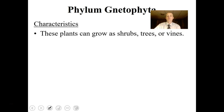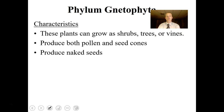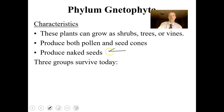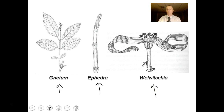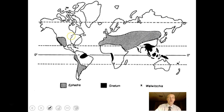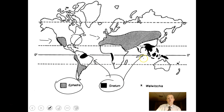The netophytes are plants that grow as shrubs, trees, or vines, producing both pollen and seed cones with naked seeds. The surviving members are Gnetum, Ephedra, and Welwitschia. Ephedra has a worldwide distribution and is found in arid areas like Utah and Arizona — it is a xerophyte, adapted to very dry conditions. Gnetum is more tropical. Welwitschia is found only in Angola and Namibia in southern Africa.